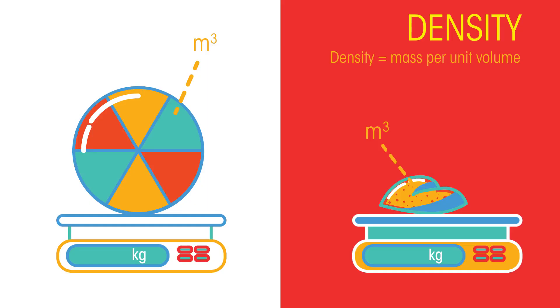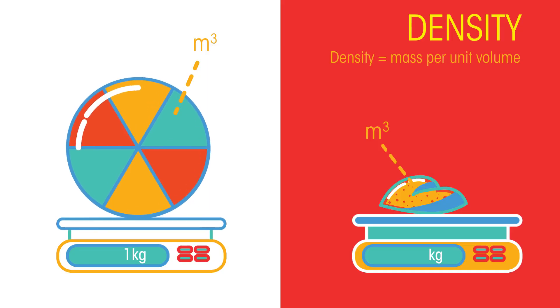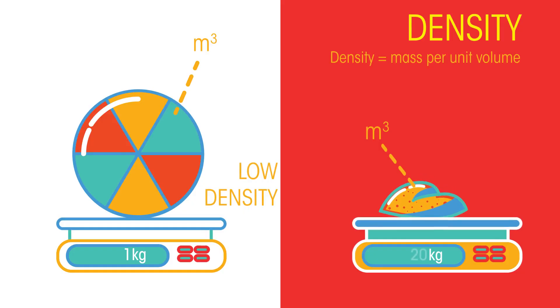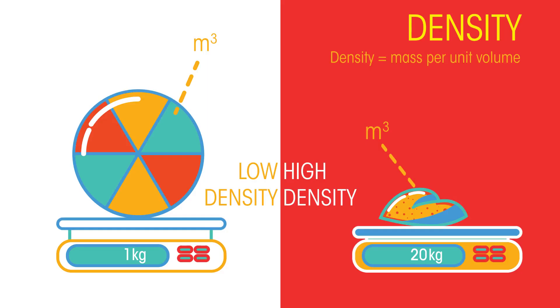So the big beach ball has a small mass but a big volume, meaning its density is very low, whereas the pebble is the opposite, lots of mass compacted into a small volume.